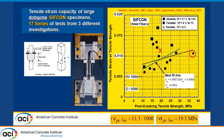Going back up to 35 years ago, I present tests done with SIFCON: 17 series from 1987, 1997, and 2002. The trend is not as sharp but it is still there — the higher the strength, the higher the strain. The average point is 11.3 over a thousand for a stress of 19.3 MPa. These specimens are quite large in cross section: 3.3 inches by 1.5 inches.